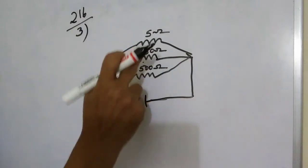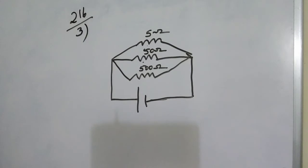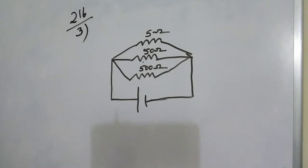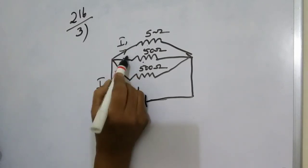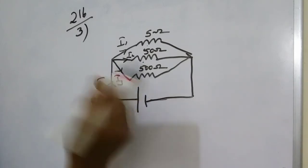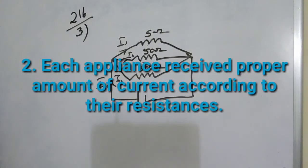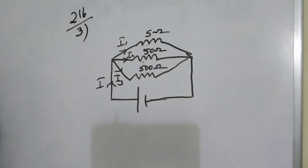Each appliance has its own resistance. According to the resistance, they need a specific current. In the case of a series circuit, the same current flows through all the appliances. But in the case of a parallel circuit, the current is divided — I1, I2, I3 — so according to their resistance, each appliance can receive the required current. That is another advantage of the parallel circuit.